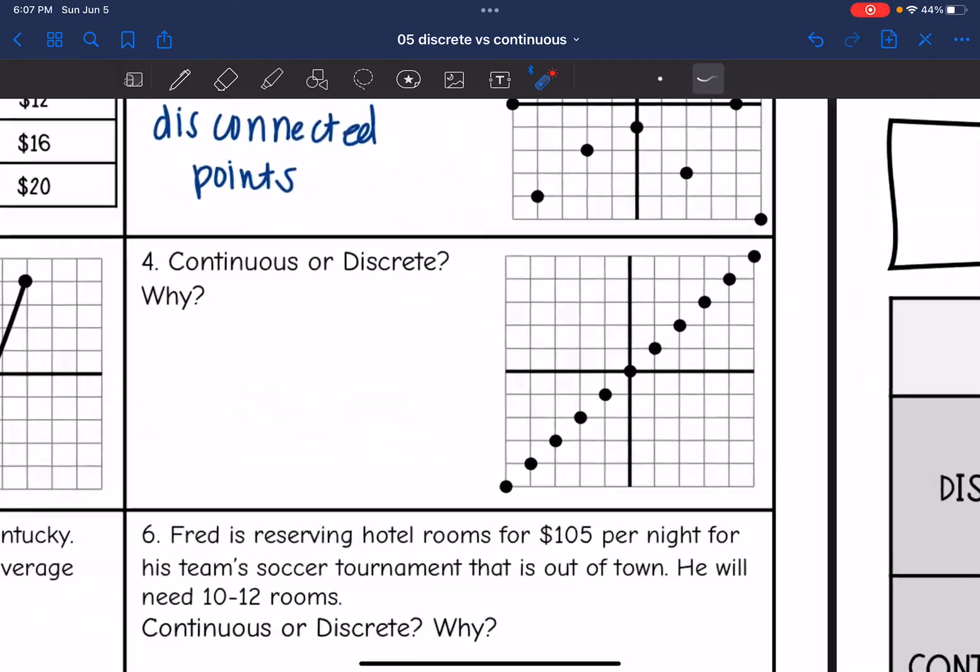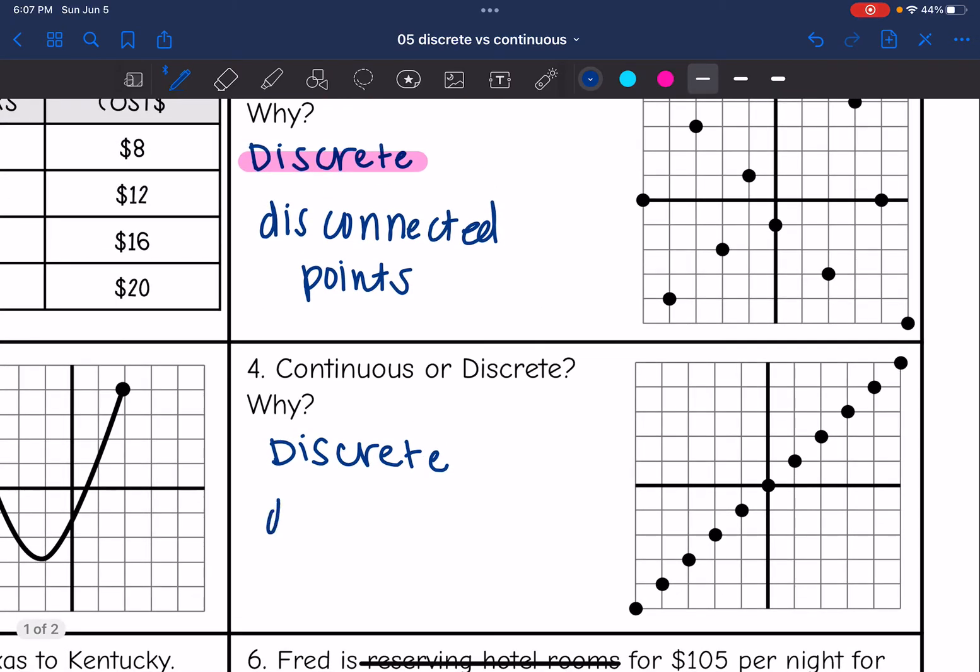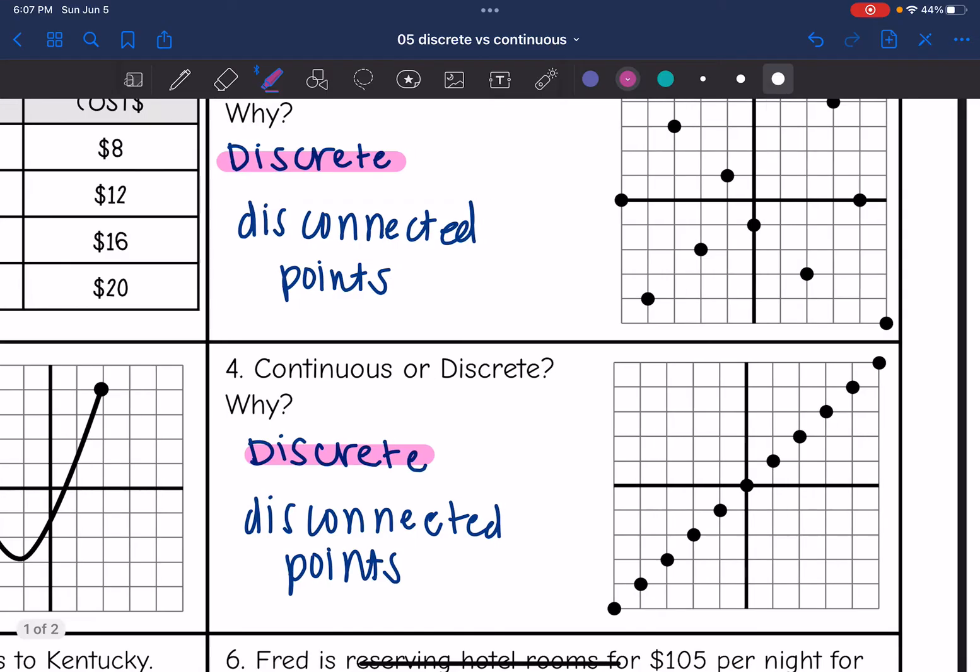All right, let's look at this next one. So we have a pattern going on here, but my points are still disconnected. And that is what makes this one discrete. And just like the one above it, we have disconnected points. And the disconnected points make it discrete.